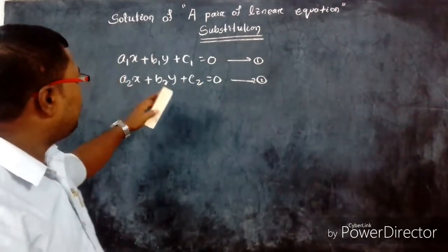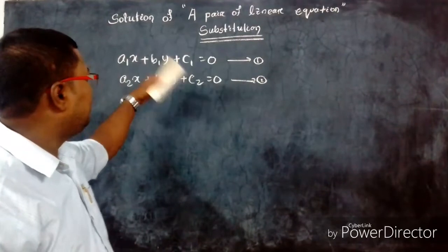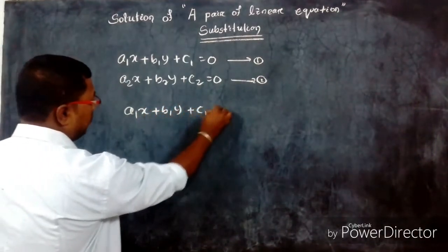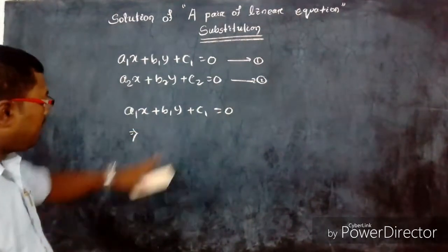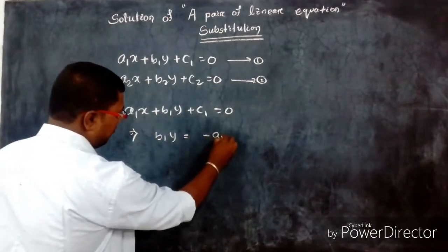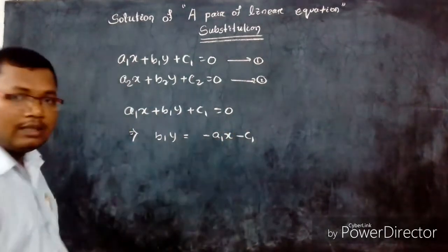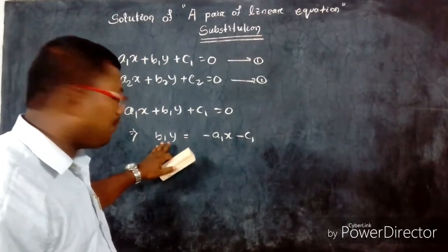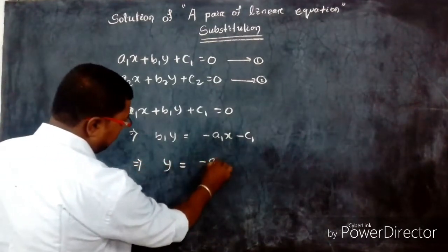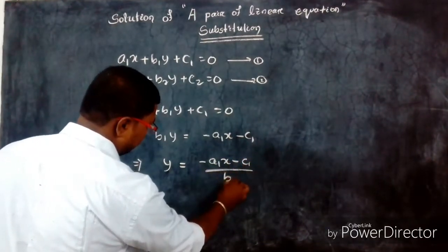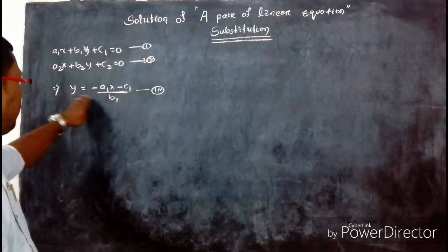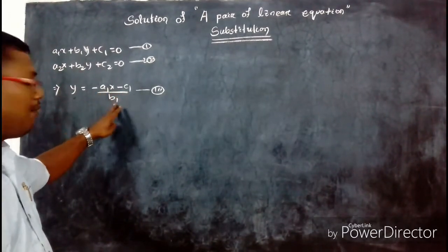First, we have to calculate the value of one variable in terms of the other variable. From the first equation, a1x + b1y + c1 = 0, we find the value of y in terms of x. That gives us b1y = -a1x - c1, and therefore y = (-a1x - c1) / b1. Let this be equation (i).